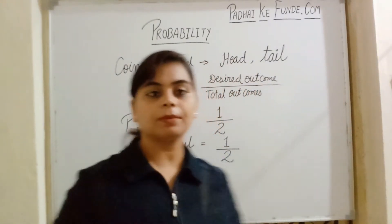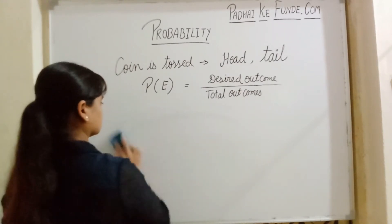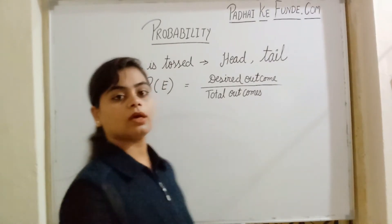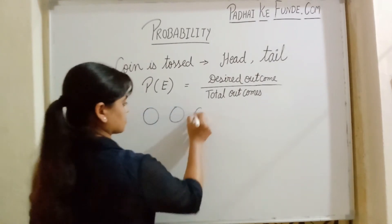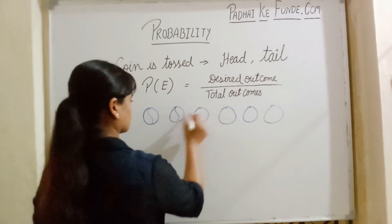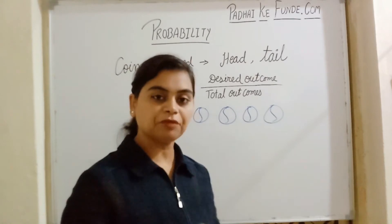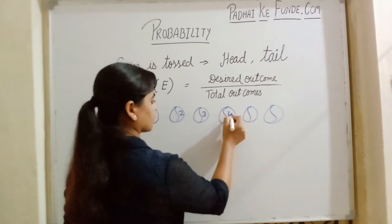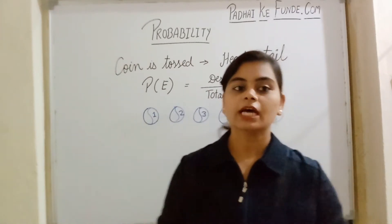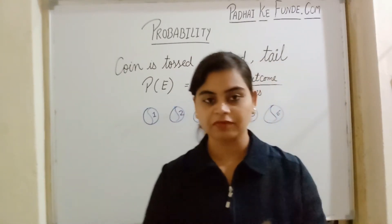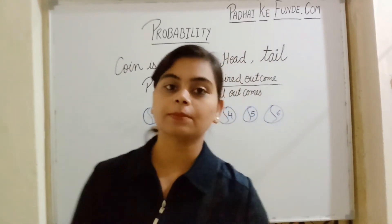Let us take another example to understand probability. I have six balls with numbers written on them, starting from one to six, and these balls are kept in a box. Now I have to choose a ball randomly from the box — I will not choose which one; I will pick any one of them randomly. If I want to find the probability of getting the ball with number two, the probability of that event is...